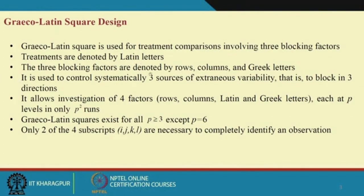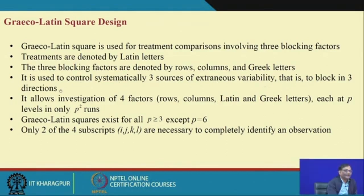The three blocking factors are denoted by rows, columns, and Greek letters. We use Greek letters to represent one blocking factor. It is used to control systematically three sources of extraneous variability — blocking in three directions. It allows investigation of four factors: rows, columns, Latin letters, and Greek letters, each at P levels in only P² runs.